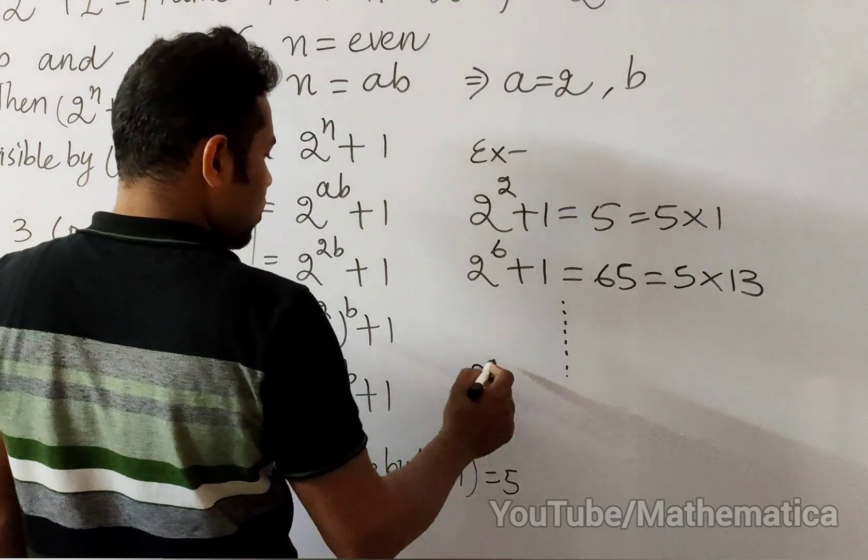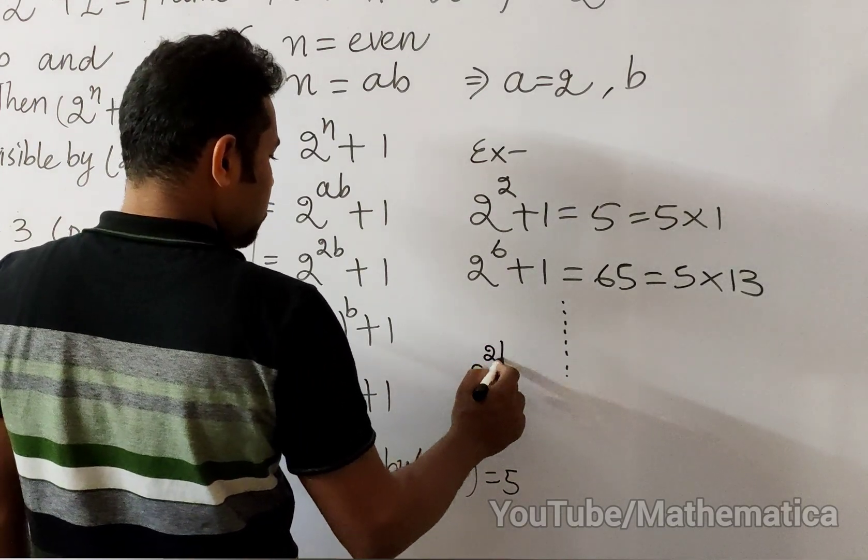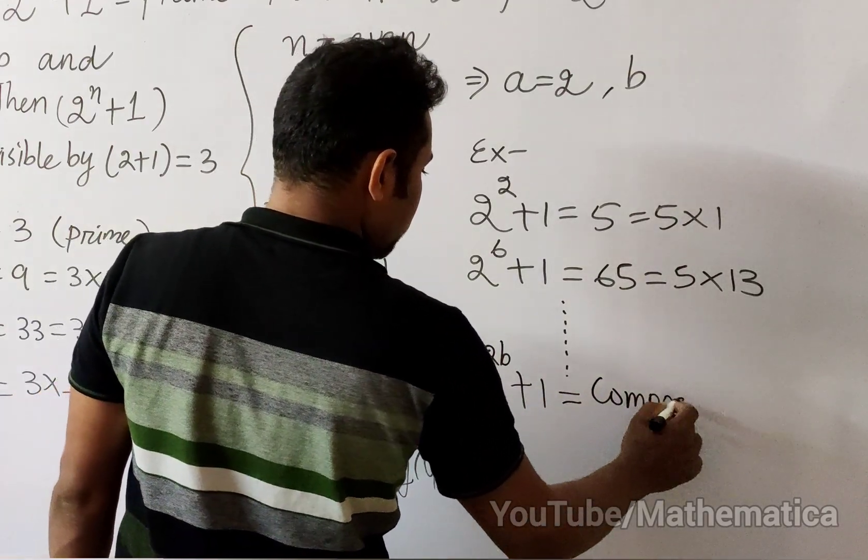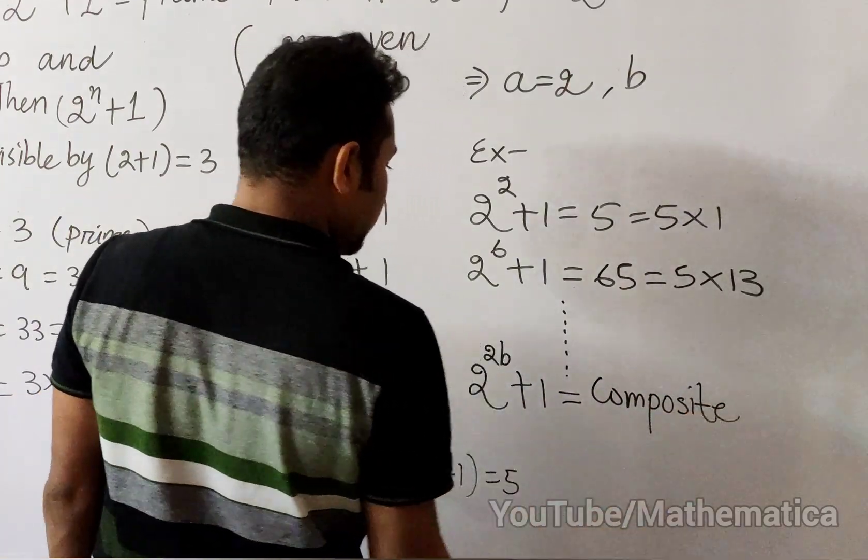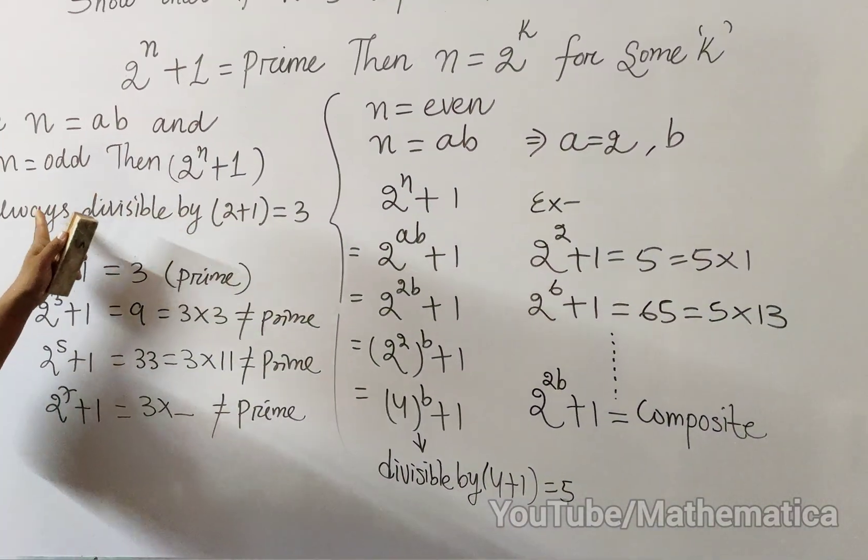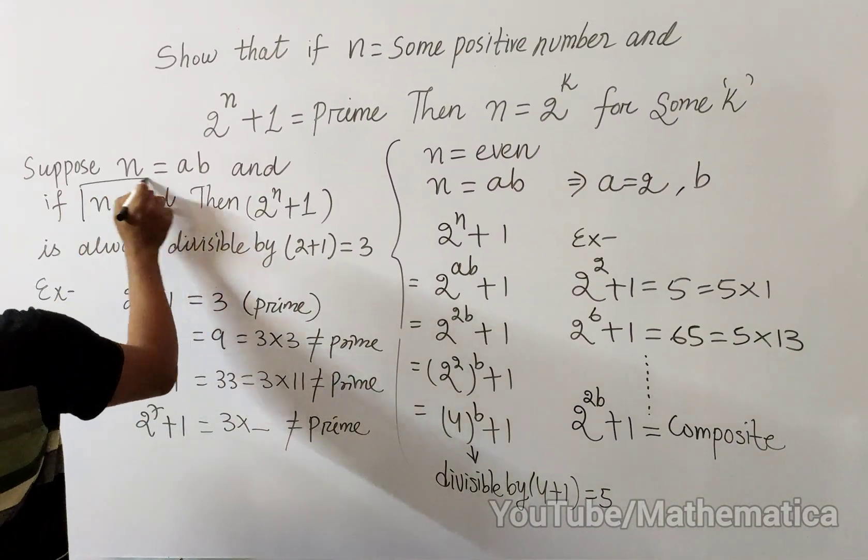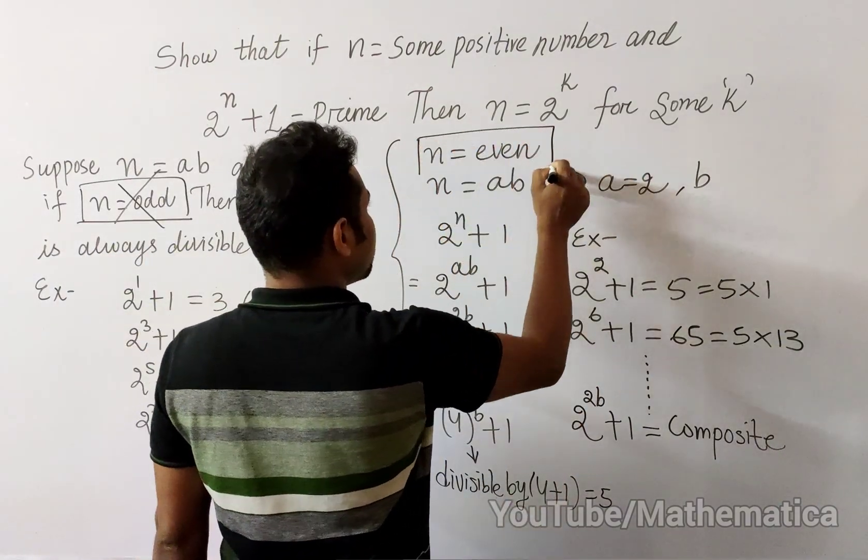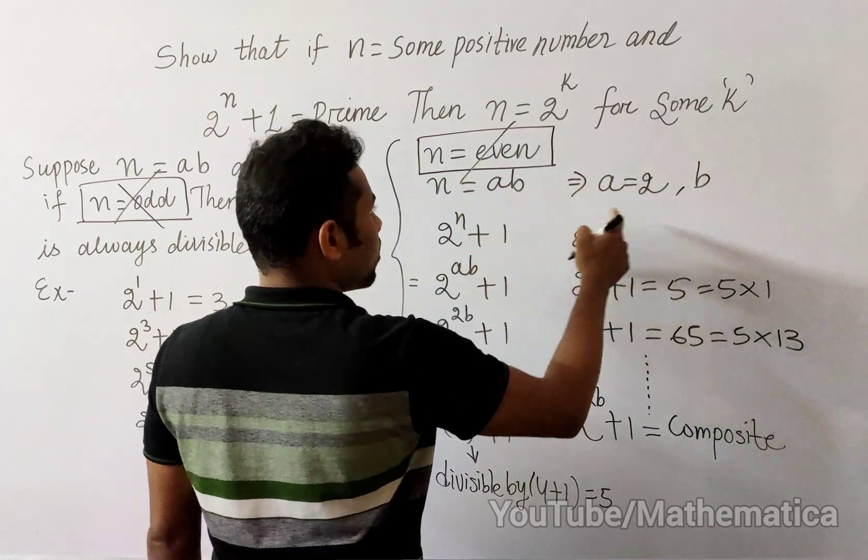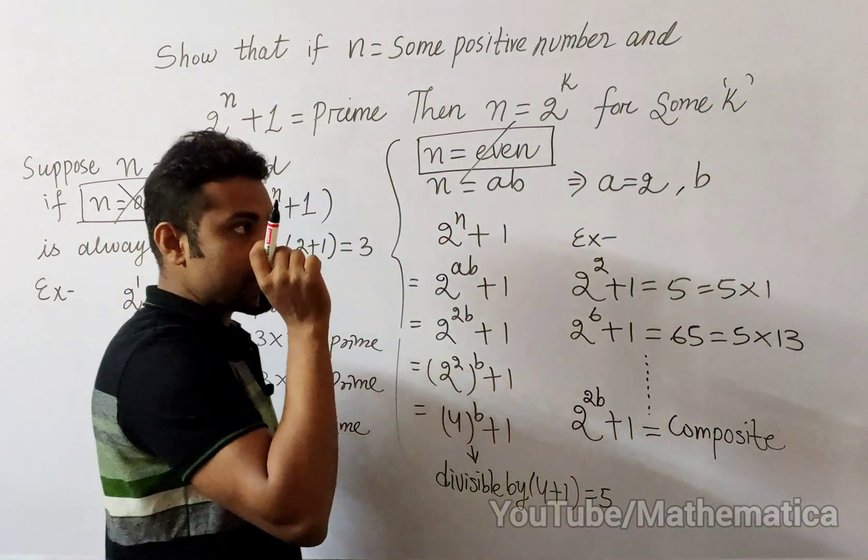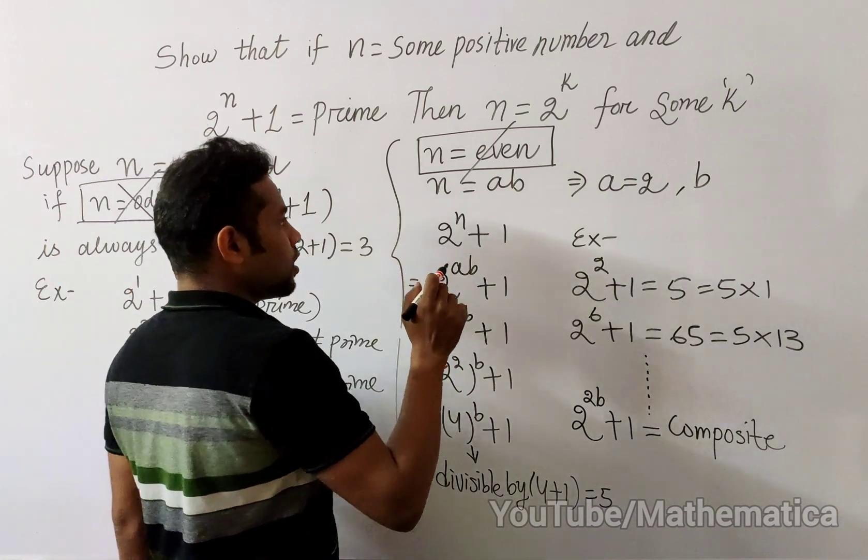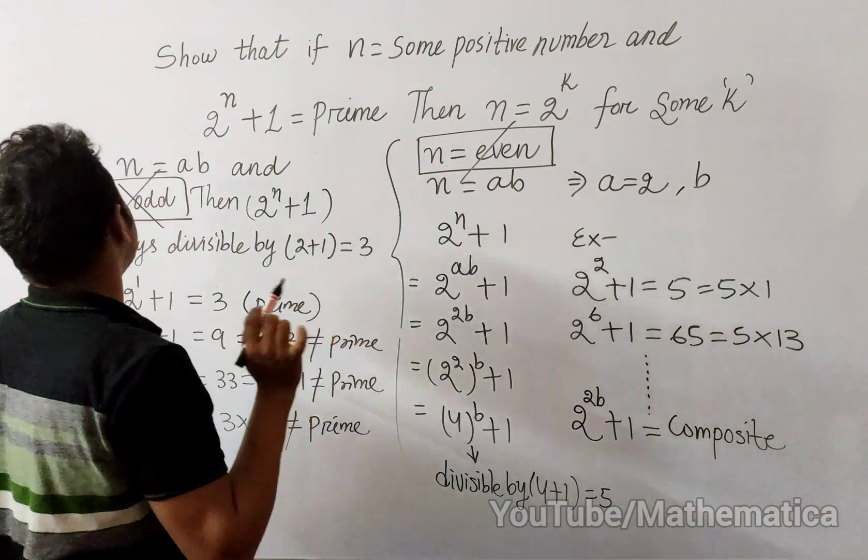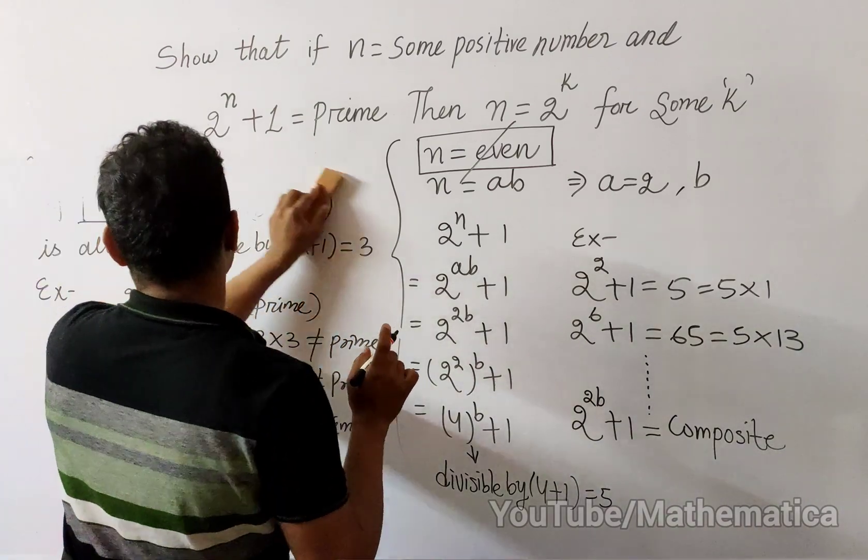Hence, if 2^(2b) + 1 is always composite, it means n cannot be odd, ruled out. n cannot be even either where at least one odd factor exists. It means n must be having all 2s only, means only possibly left.